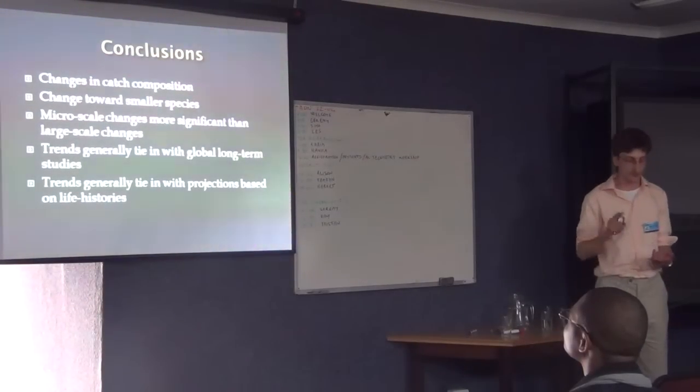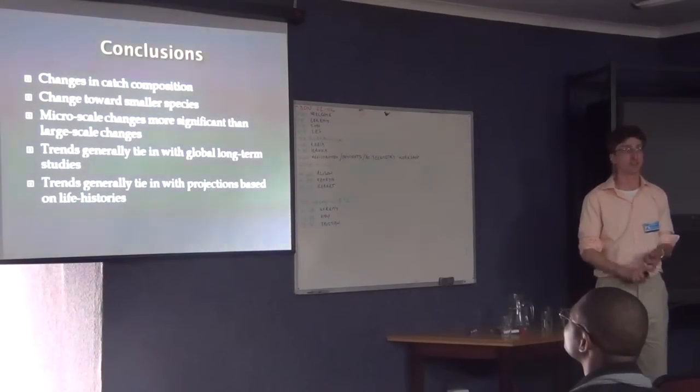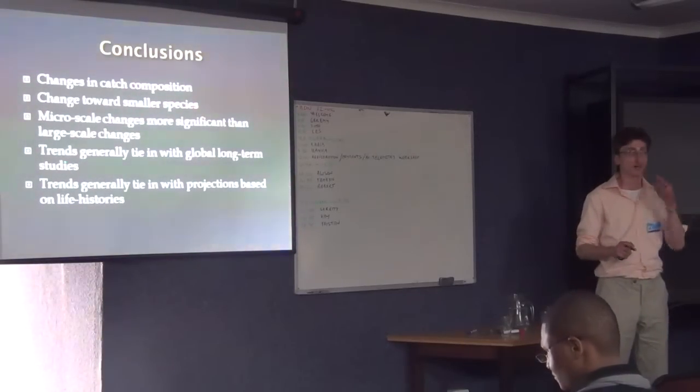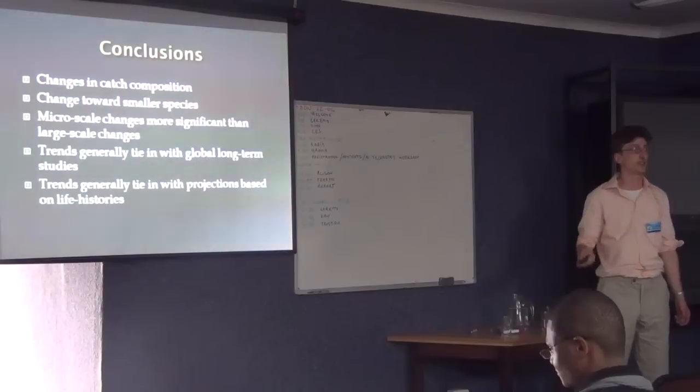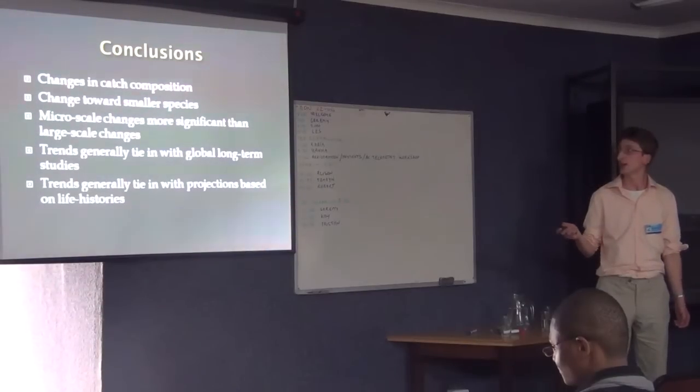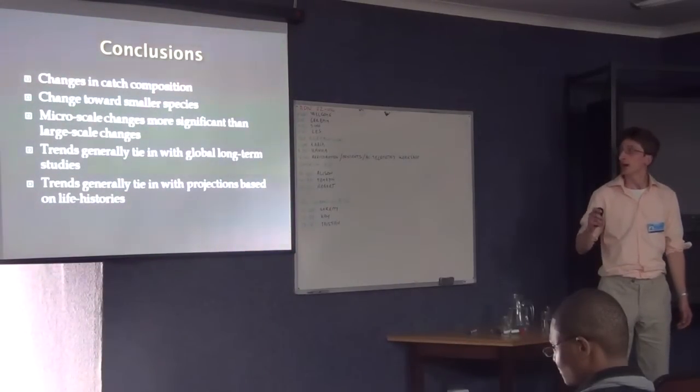So in conclusion, there have been significant changes in the catch composition. Relative to the teleosts, this has been from large, slow growth species to smaller species. The changes on the micro scale are more significant than the long term changes on the large scale. But these trends generally tie in with what we've seen in other long term studies, internationally.